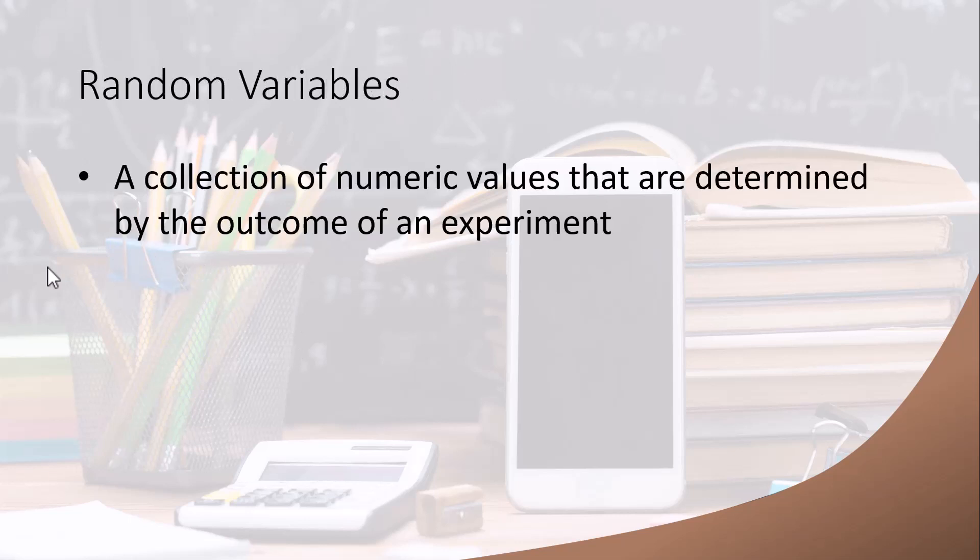So let's start off with random variables. A random variable is a collection of numeric values that are determined by the outcome of an experiment. An obvious experiment might be a coin toss, where the outcomes are heads and tails. A random variable would map heads to 1 and tails to 0. So we take an outcome of any experiment and we assign a number to it.